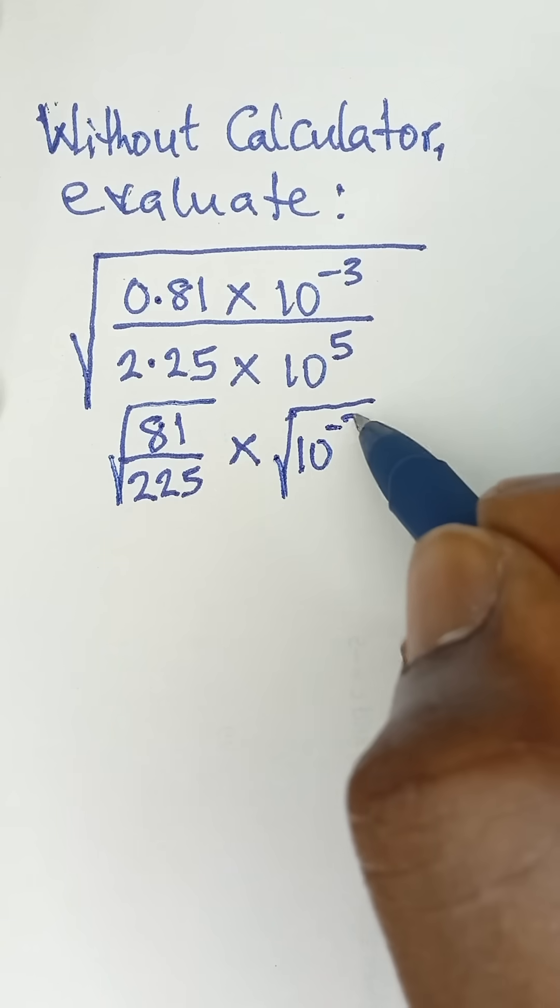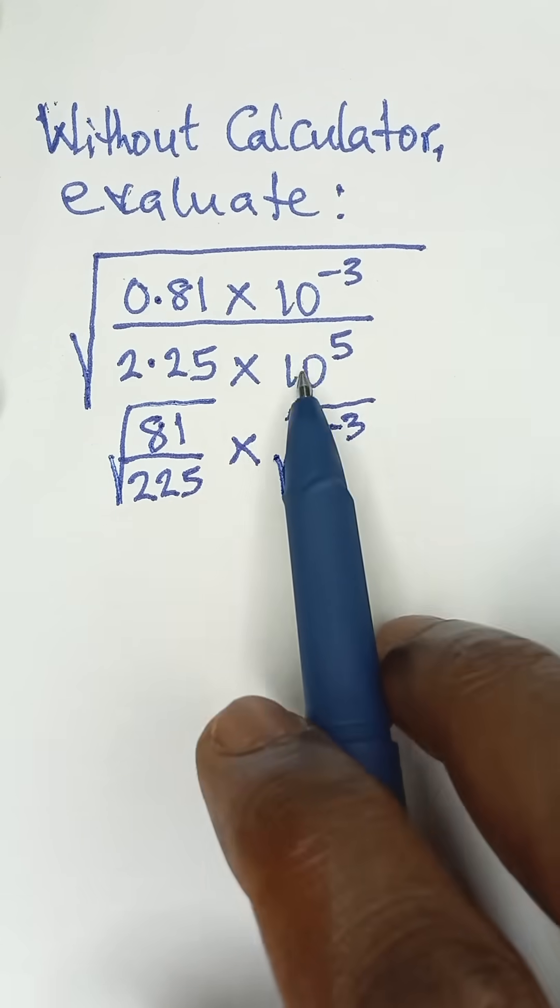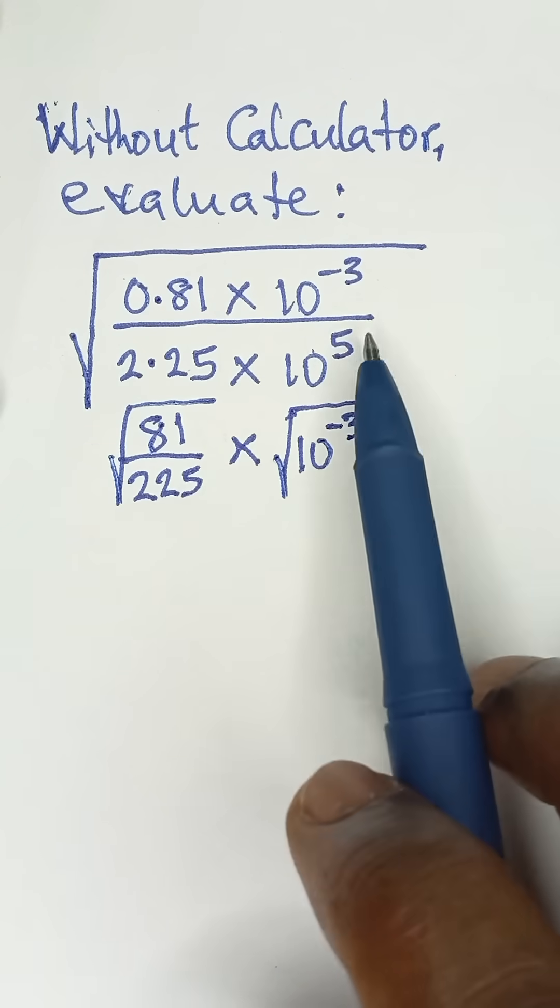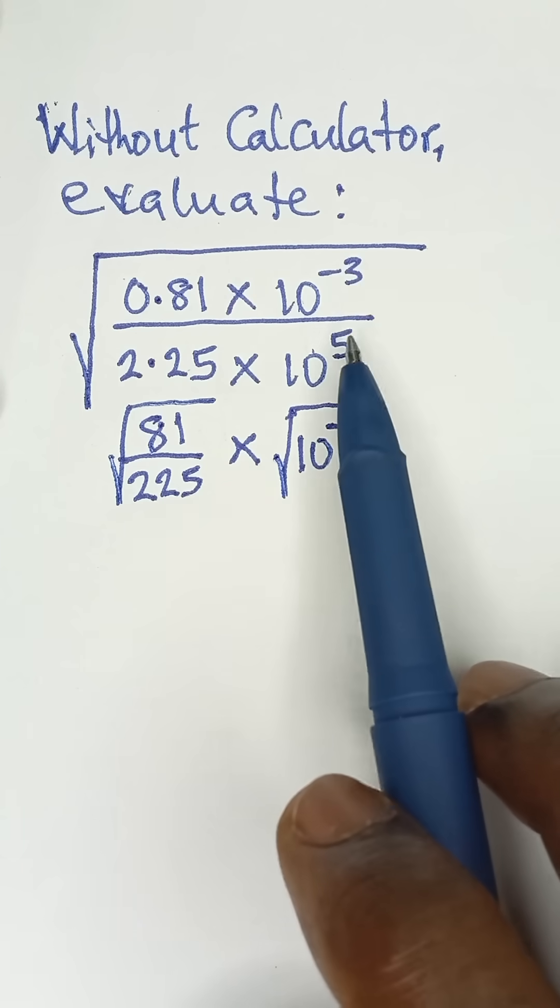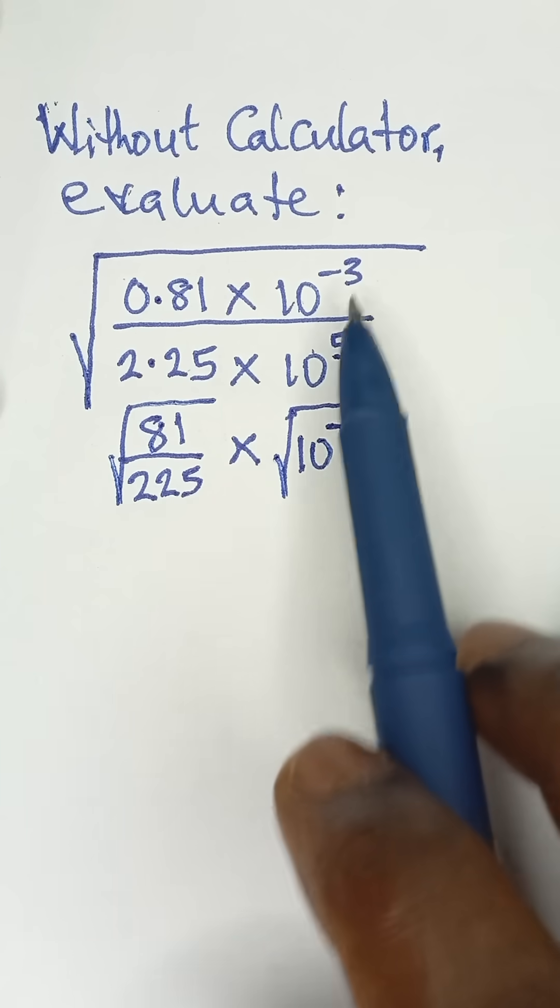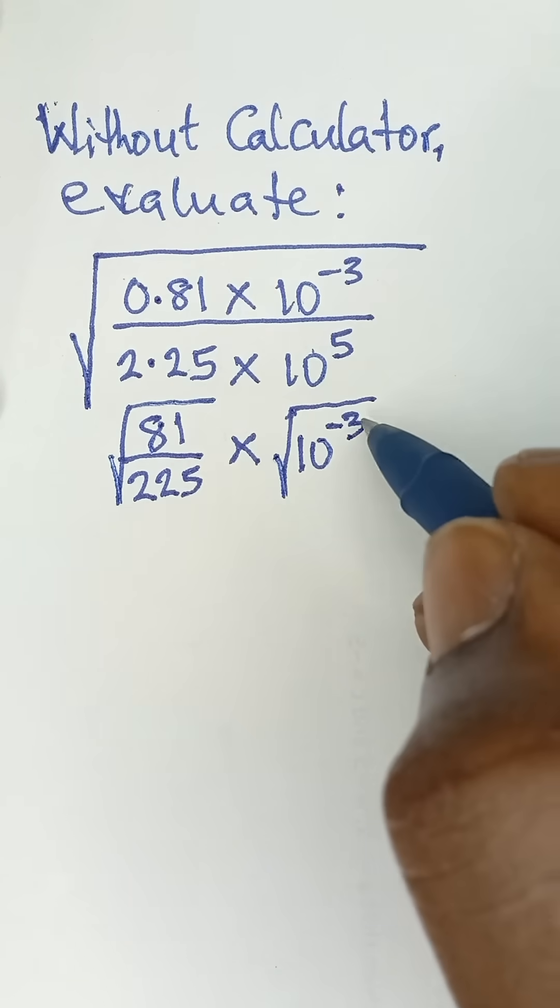And then because the bases are the same, 10 and 10, and then according to indices, we can subtract the power since they are dividing each other. In division we subtract power, so we say negative 3 minus 5.